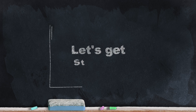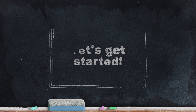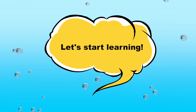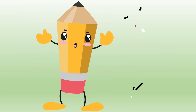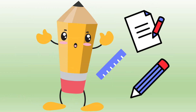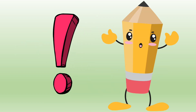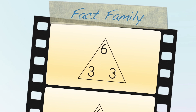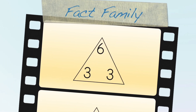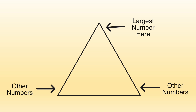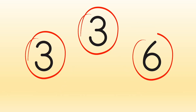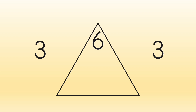So let's get started with fact family one, one, two. A fact family is made up of three numbers that go together to make addition and subtraction facts. You put the largest number at the top of the triangle and the other numbers go to the bottom. Let's use the numbers three, three, and six — these three numbers are an example of a fact family, so six goes to the top and both threes go to the bottom.